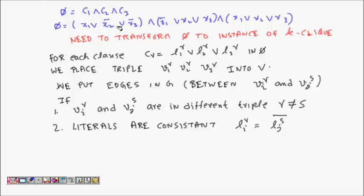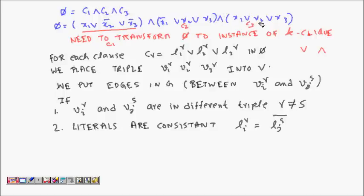For example, φ has three clauses C1, C2, C3. Inside each clause, three literals are OR-ed. Specifically: (¬x1 ∨ x̄2 ∨ x̄3) AND (x̄1 ∨ x2 ∨ x3) AND (x1 ∨ x2 ∨ x3). So k equals three here.